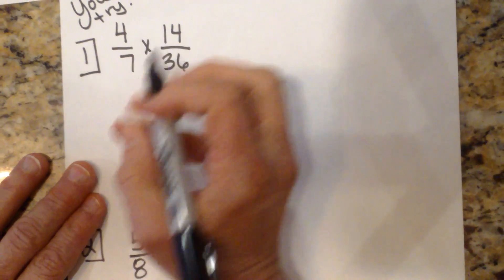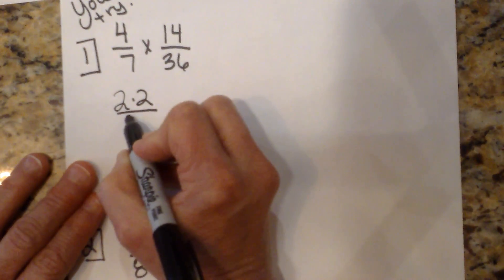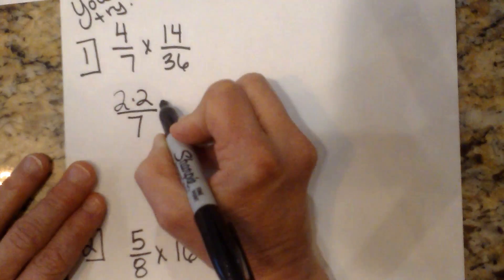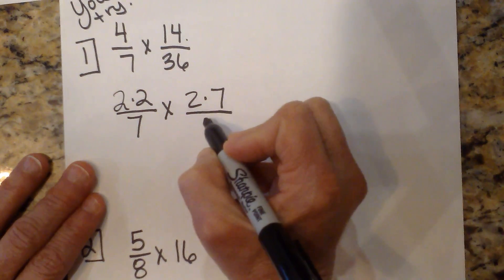I'm going to break down the 4 into the prime factors: 2 times 2. 7 is prime, so it's just going to be 7. Times 14 is 2 times 7.